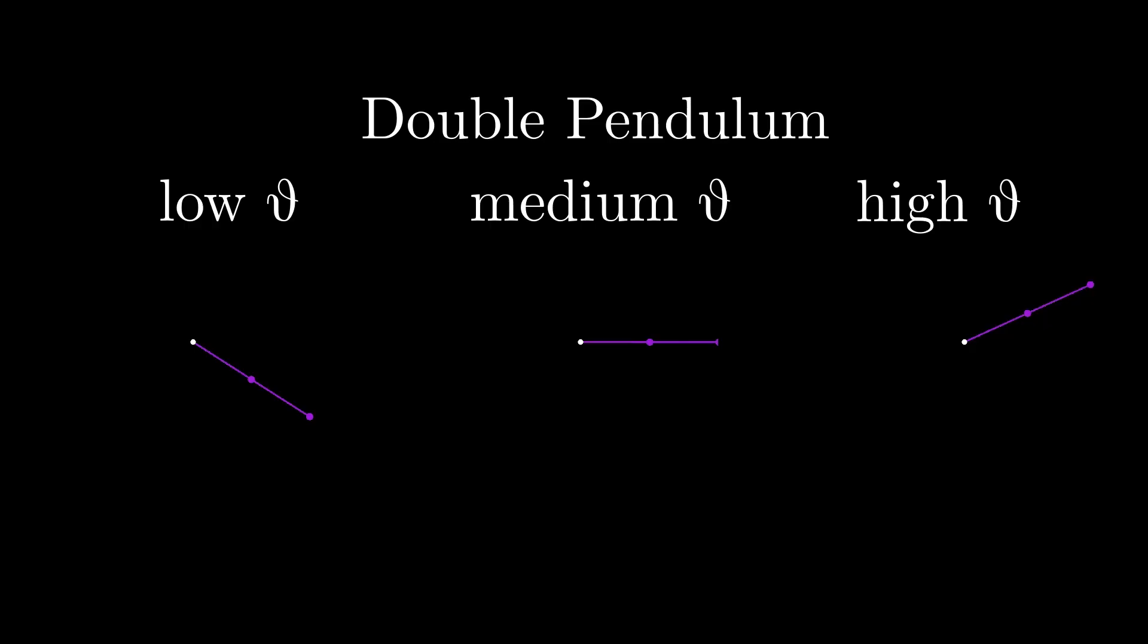In this simulation there is no friction. So we can also think about low, medium and high as the amount of energy that these pendulums are initiated with and that they conserve during their trajectories.